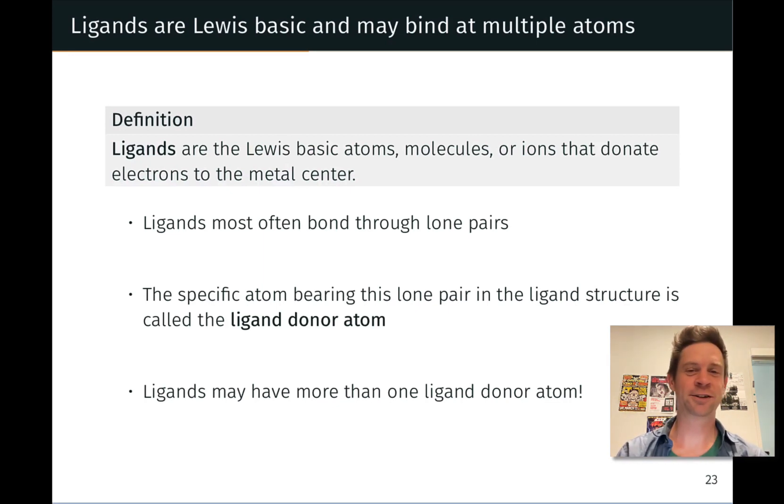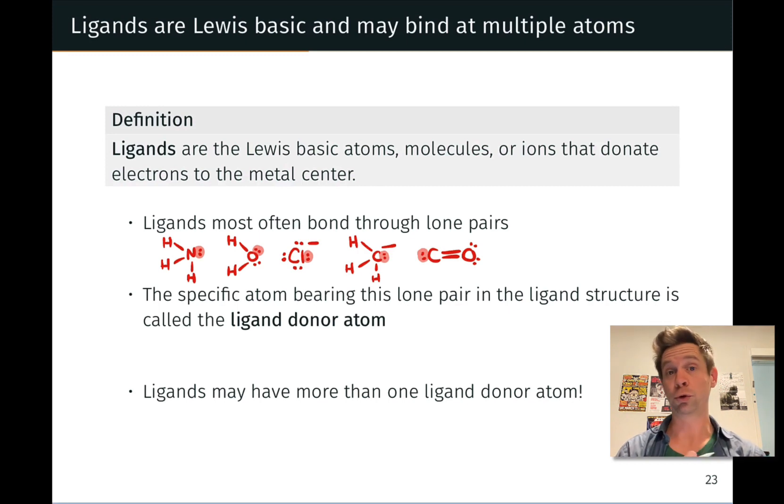However, if you go on to more advanced courses, particularly in inorganic and organometallic chemistry, you'll see pi bonds and even sigma bonds being donated to metal centers as well. But for introductory chemistry, ligands most often bind through lone pairs.